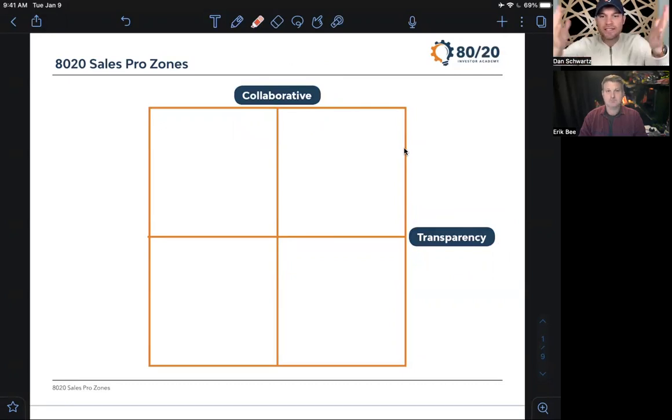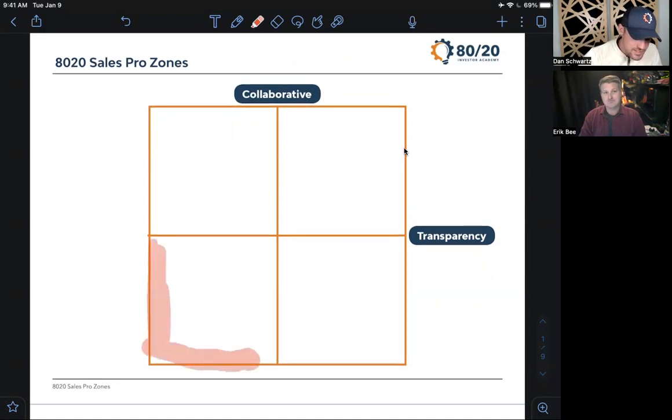Yep. So there's two dimensions for how you show up on an appointment. Collaborative and transparent. And when we are working with clients in our 80-20 Investor Academy program, we see people come in and they fit into one of these boxes.